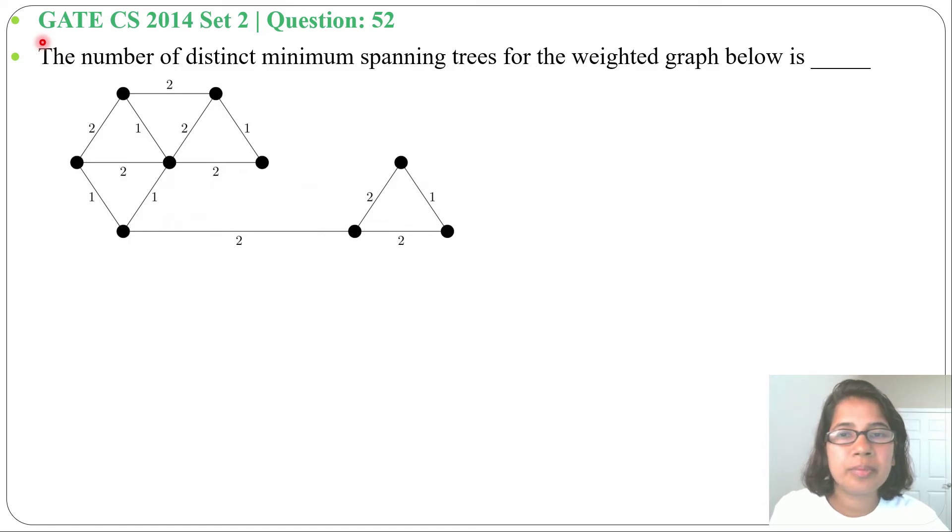Hi, let's solve one previous question based on greedy technique. This question was asked in GATE CS 2014 Set 2, question number 52. The number of distinct minimum spanning trees for the weighted graph below is blank. And this is the weighted graph.